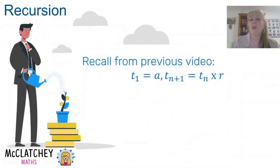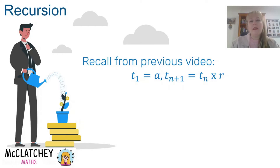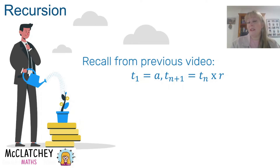Let's kick off by recalling from our previous video on introduction to geometric sequences that the basic form for a geometric sequence is: T1 equals A, and T(n+1) equals Tn times R. Every recurrence relation has three parts: information about the first term T1, then an equation where we do something to a term Tn — in the case of a geometric sequence, we multiply by the common ratio to get the next term.